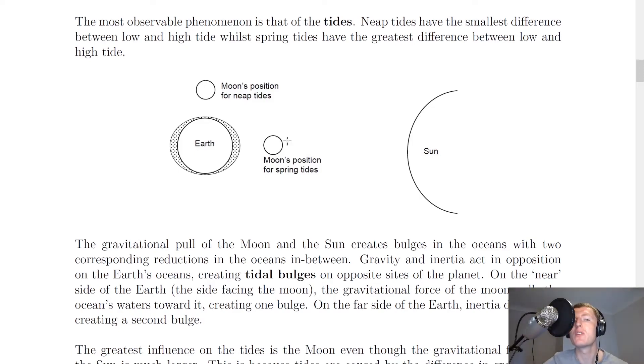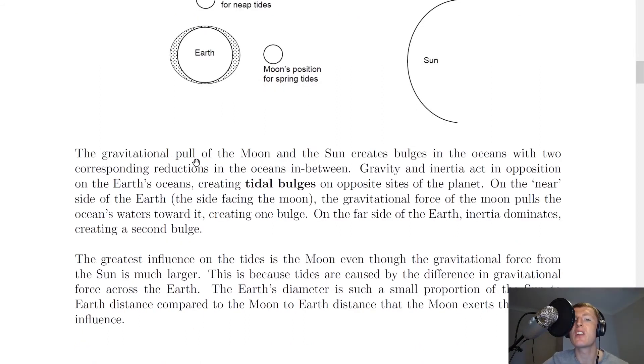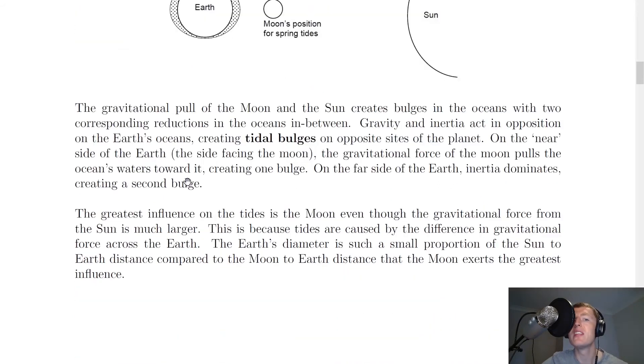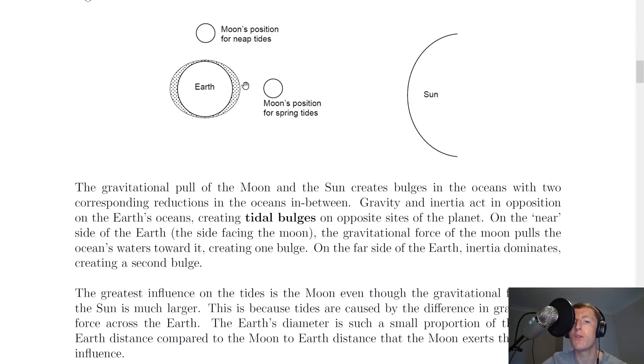Now due to gravitational forces, the Moon is going to cause tidal bulges in the shape of the Earth. The gravitational pull of the Moon and the Sun creates bulges in the oceans with two corresponding reductions in the oceans in between. Gravity and inertia act in opposition on the Earth's oceans, creating tidal bulges on opposite sides of the planet, which is what you see in this picture here. These are tidal bulges here. On the near side of the Earth, the side facing the Moon, the gravitational force of the Moon pulls the ocean's waters towards it, creating one bulge. On the far side of the Moon, however, the inertia dominates, creating a second bulge.